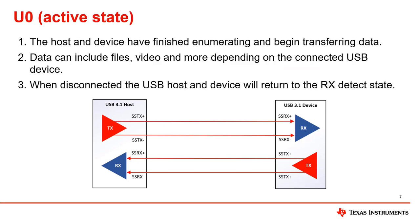U0 is the active state of a USB 3 connection, where data transfer between the host and device takes place. This is how a USB 3 flash drive, capture card, or webcam communicates with an attached computer. In a working system, U0 will persist until the interface is brought to a low power mode, or is interrupted by disconnecting the USB.